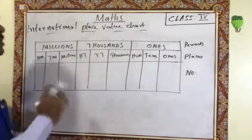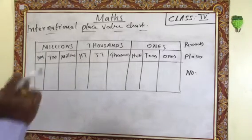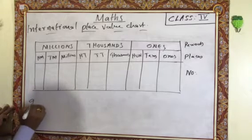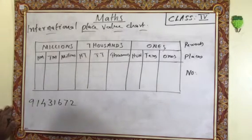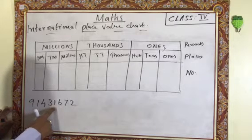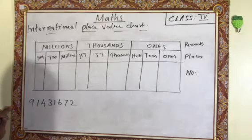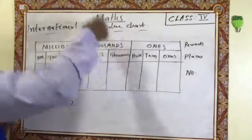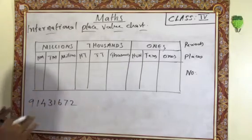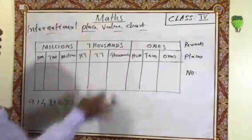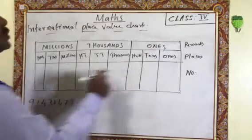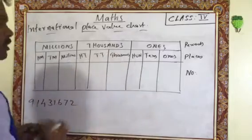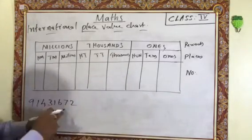Now I am going to place one number in this International place value system. First, you have to count the digits — this is an eight digit number. Make eight columns, then easily we can place the number. Write the numbers from right side to left side — don't write from left to right. I will explain why later.